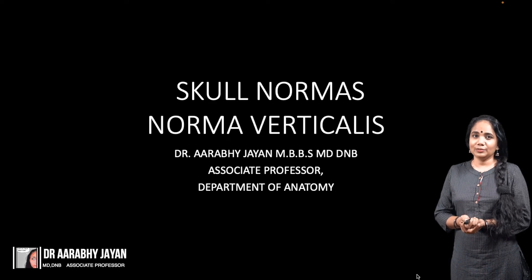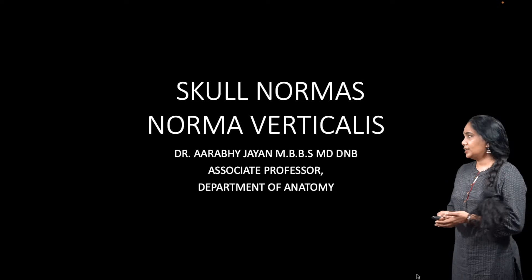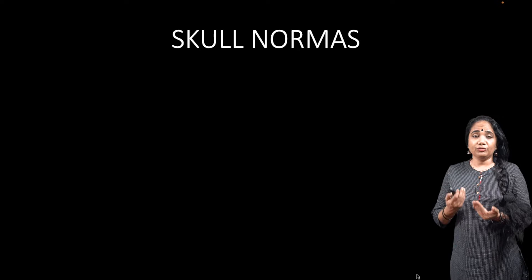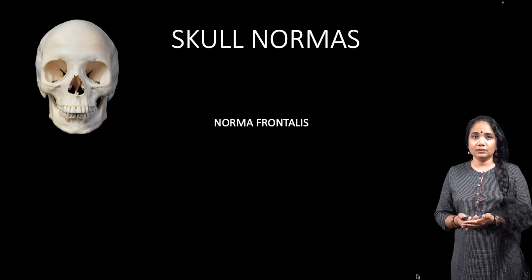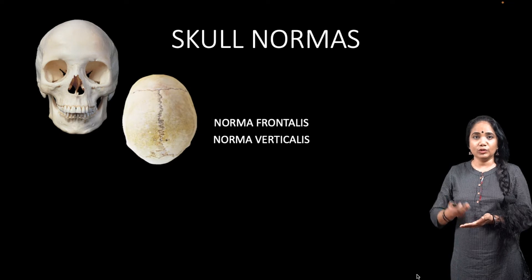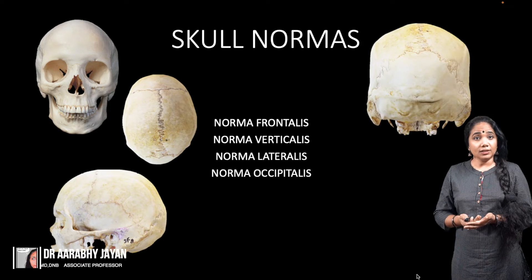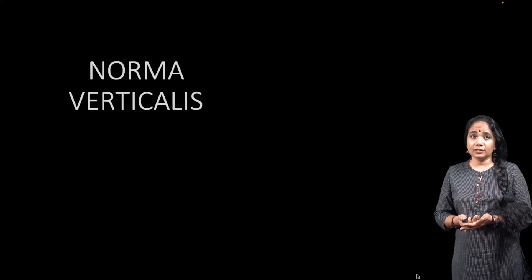Welcome to another episode of Let's Talk Anatomy. Today we'll look at skull normas, specifically the norma verticalis. The skull normas are the different views by which we study the skull. There are five: norma frontalis (front), norma verticalis (top), norma lateralis (sides), norma occipitalis, and norma basalis (from below/the base).